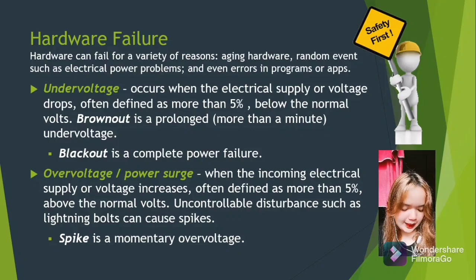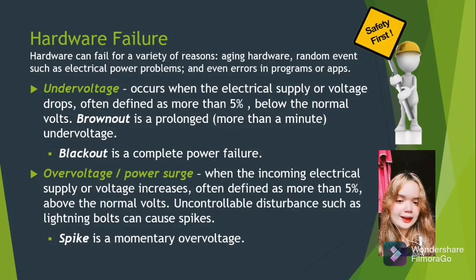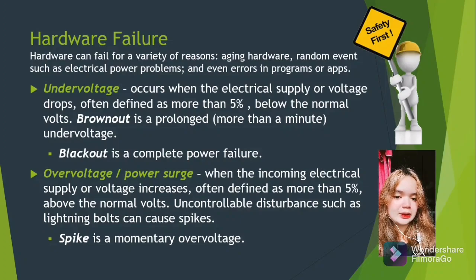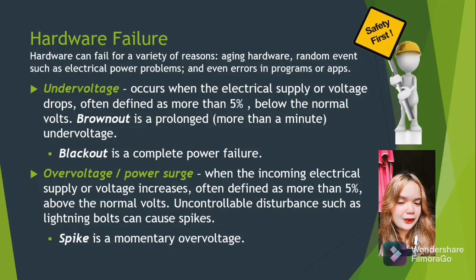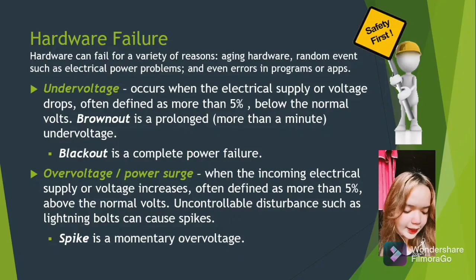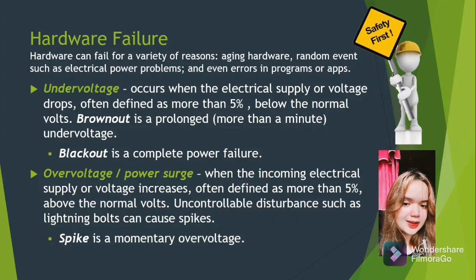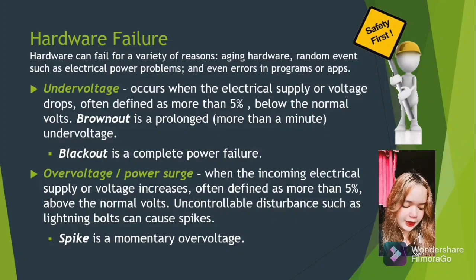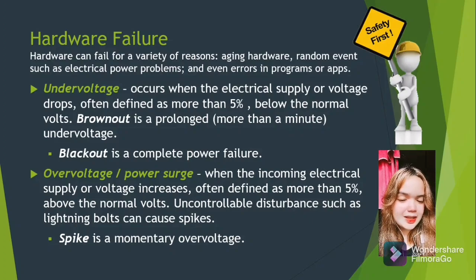Under voltage occurs when the electrical supply or voltage drops — defined as more than 5% below the normal volts. Under voltage is also referred to as a voltage sag, which occurs when the average voltage of a three-phase power system drops below its intended level. A brownout is a full under voltage lasting more than one minute. A blackout is a complete power failure. Over voltage or power surge occurs when the incoming electrical supply or voltage increases, often defined as more than 5% above normal volts. A spike is a momentary over voltage.